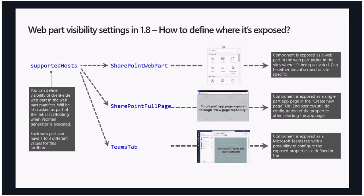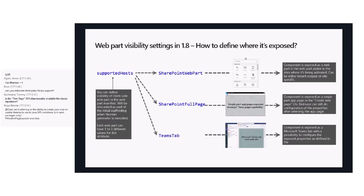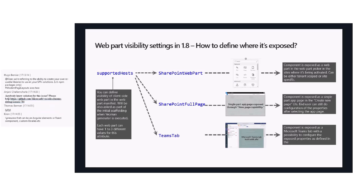There's a question from Tommy about whether SBA functionality is available for classic experiences — the answer is no. The SharePoint full-page option is only available in modern experiences because it's built on top of the upcoming modern page layout selection functionality. The web part option is available in classic as well, but the full-page option is modern only. I can't do a live demo on this one in this call, but I will do a live demo on the next call when the GA is available. We will also have a demo from Luis Manez later in this call to talk about the single-part web page in practice.